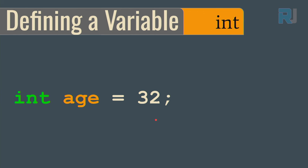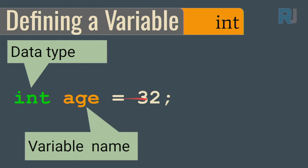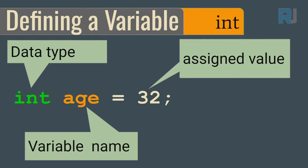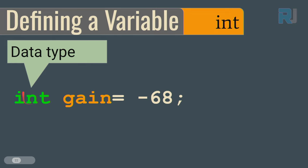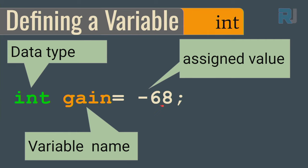Now let's see how to define variables. If we want to define the age of someone, since it's a number we use integer — int in lowercase. The syntax is: data type, then variable name, then equals sign, then assign a value. For example, for a variable named gain, we use data type integer with a minus value — integer can hold negative and positive values. If you want to store age and know you'll never need a negative value, you can add unsigned in front of int — this means the variable will not hold a signed value.